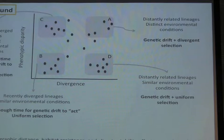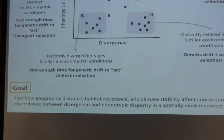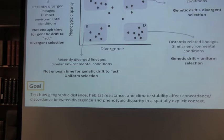My goal is to use this approach with Leposoma cinchoidus and look at how geographic distance, habitat resistance, and climate stability affect the patterns of discordance between divergence and phenotypic disparity in a spatially explicit context.